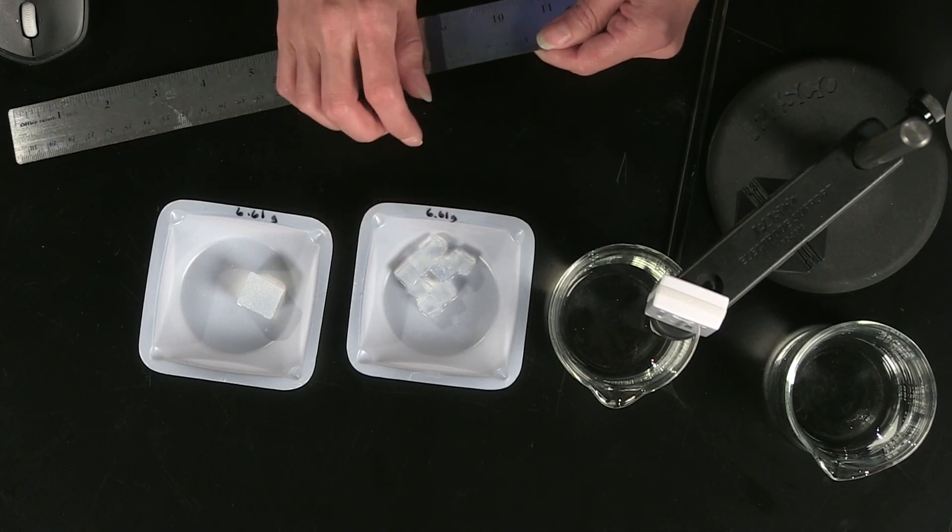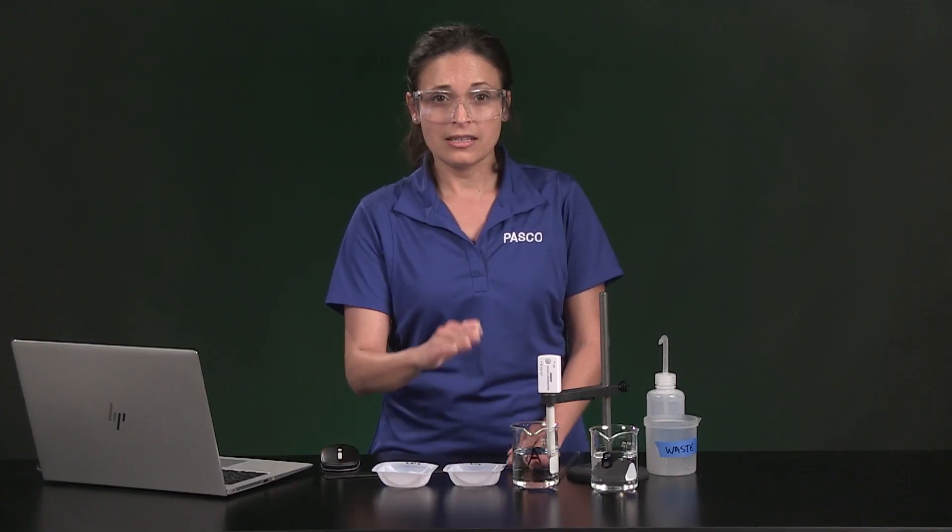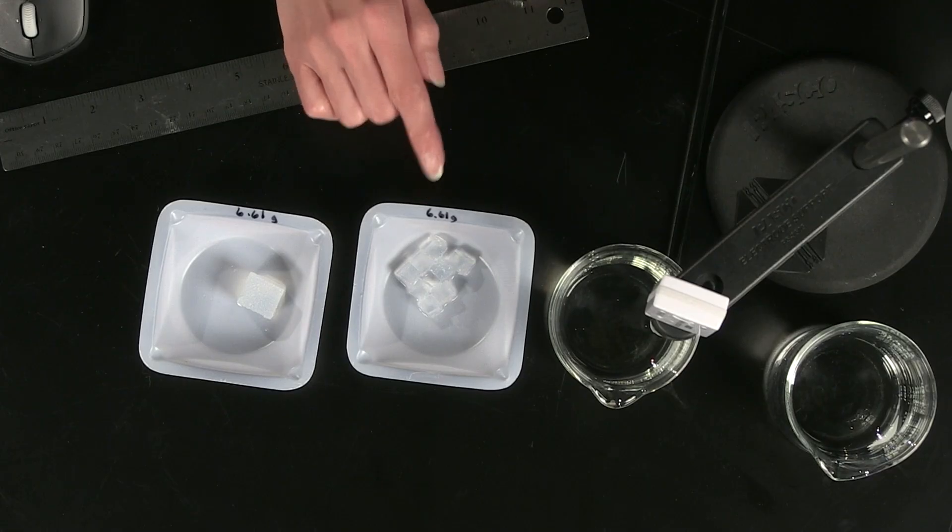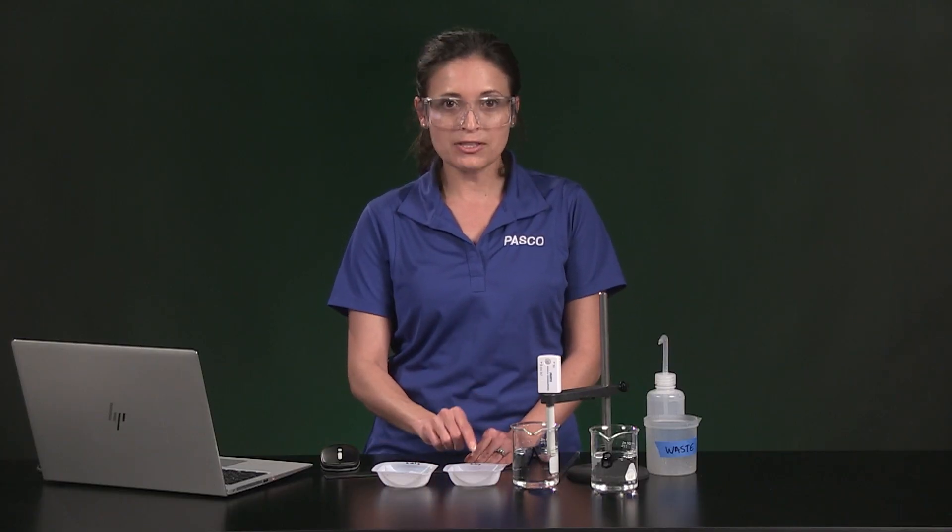Sample B started out as a 2 by 2 by 2 cm cube, which I cut in half 1, 2, and 3 times to make 8 equally sized smaller cubes. You will need to calculate the surface area and volume of just one individual cube and enter this information in Table 1.